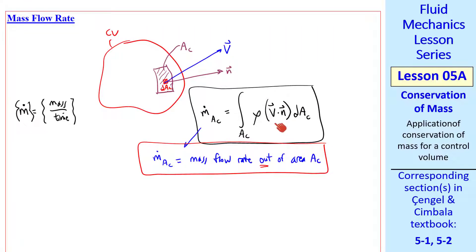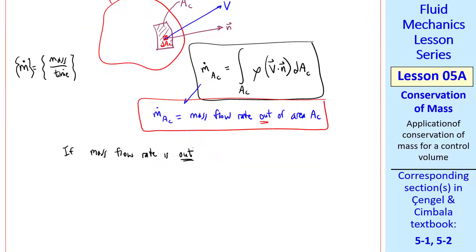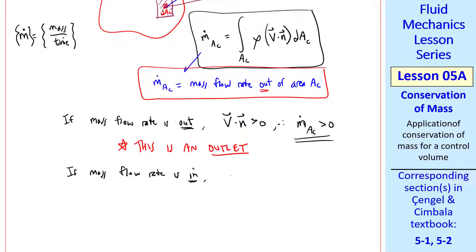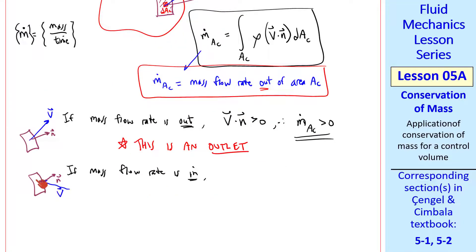When you do these vector dot products, the sign takes care of itself. If mass is flowing out, as in my diagram, the dot product of v dot n will be positive. Therefore, m dot ac will be positive also. So this is an outlet. If the mass flow rate is in, we have velocity flowing into the surface instead of out of it. But the outward normal is the same if we're talking about the same ac. In that case, v dot n is negative. And this is an inlet.